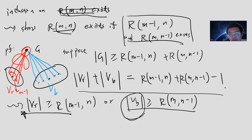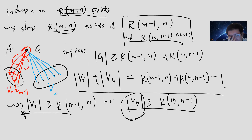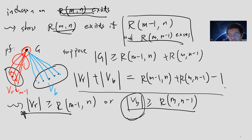Hopefully this video gives you the proof and helps you understand Ramsey theory. Maybe in a future video I can show that one can use this proof to show that if you draw more colors, you can also find a recursion formula. See you guys next video.